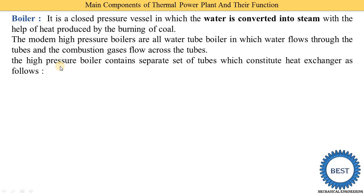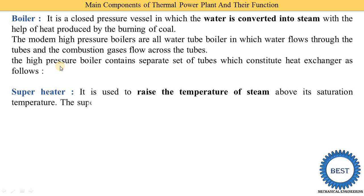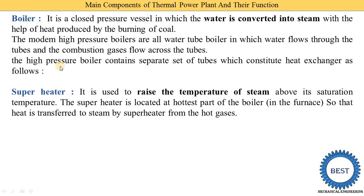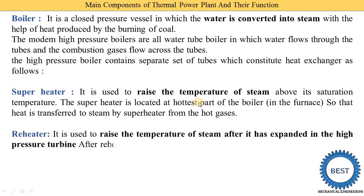First we understand the superheater. The superheater is installed after the boiler — the steam coming out from the boiler is supplied to the superheater. In the superheater, the temperature of steam is raised above its saturation temperature, which is why it is called the superheater. It is located at the hottest part of the boiler so that heat is transferred to the steam from the hot gases.